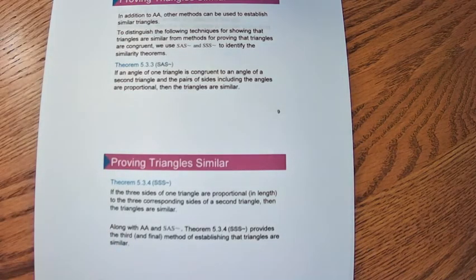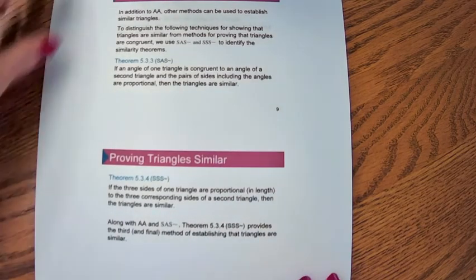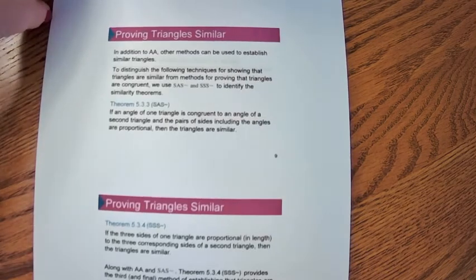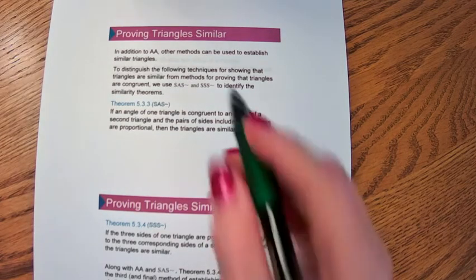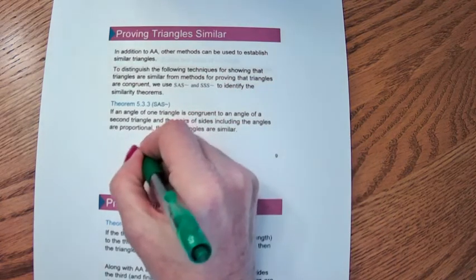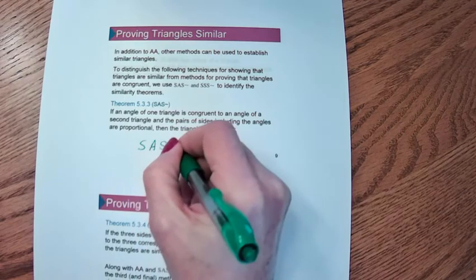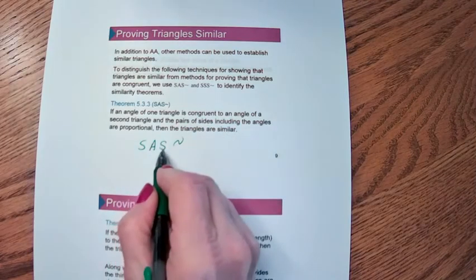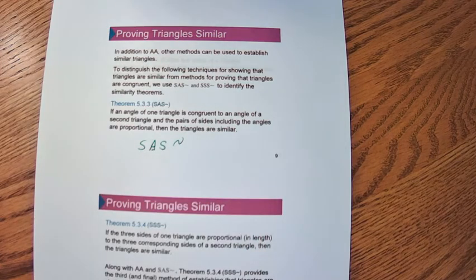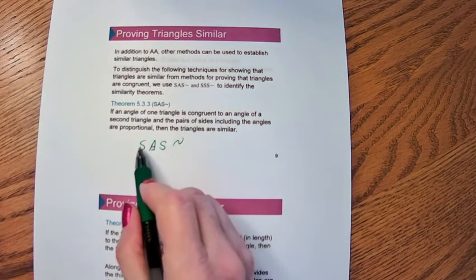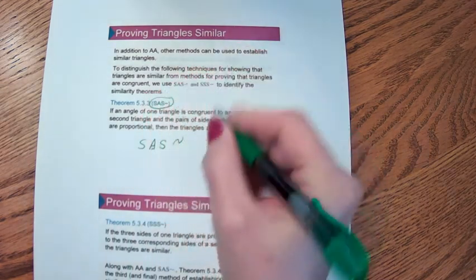So that's AA — two angles are congruent, and that's enough to say two triangles are similar. Now, if I can prove that the sides and the included angles — meaning sides are proportional and the angle is congruent — I can say those triangles are similar. We would call that SAS similar: side-angle-side similar. That says the sides are not congruent, but proportional.